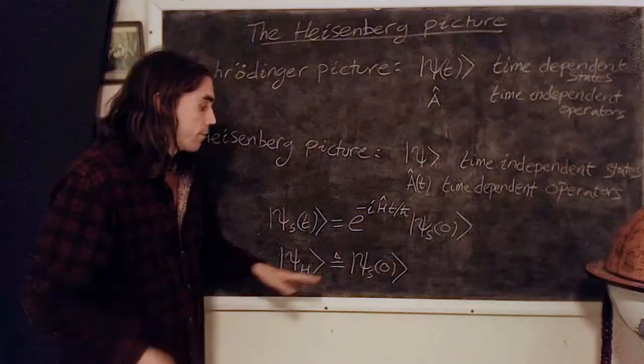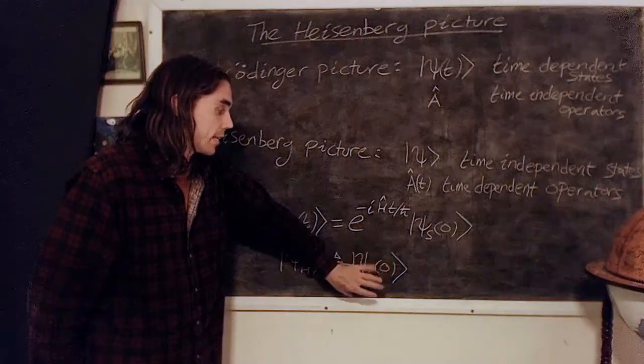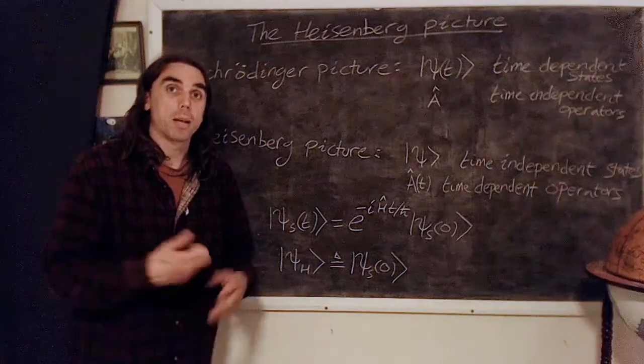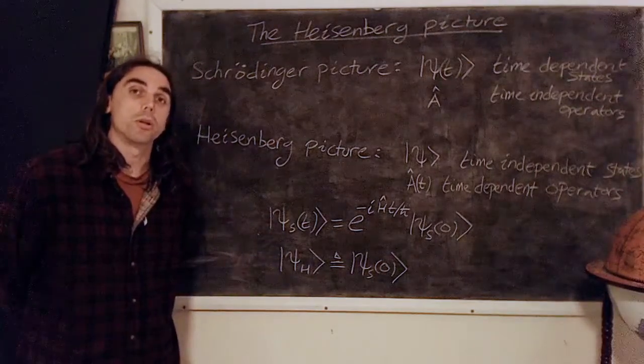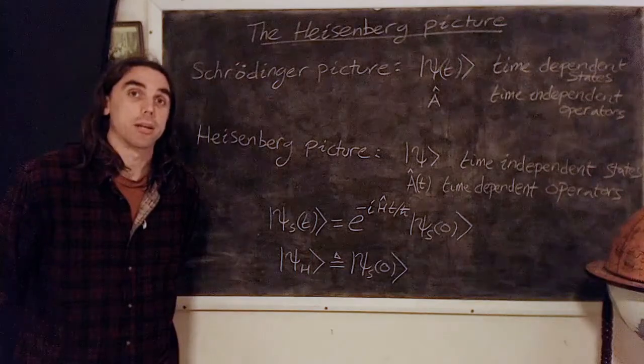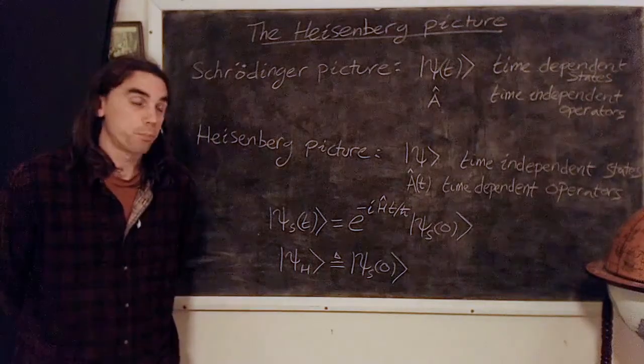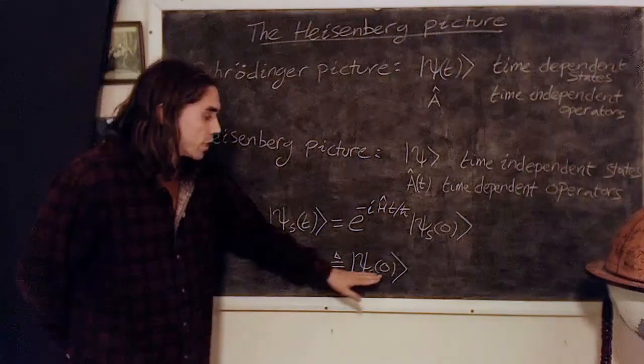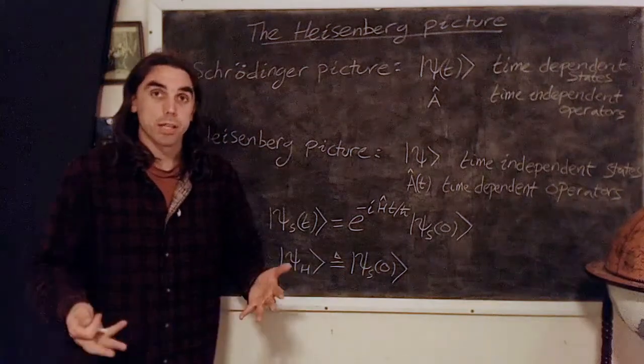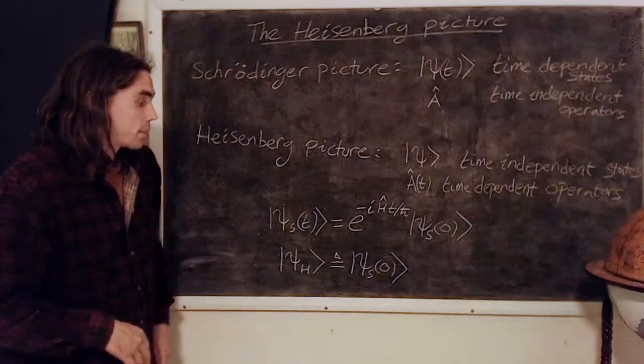If you multiply the state by some unit magnitude complex phase, that's just the global phase of the wave function. If you multiply the state by a global phase it doesn't change anything physically, as we know global phases are unobservable. So let's choose this one by definition—it's just a convenient choice.